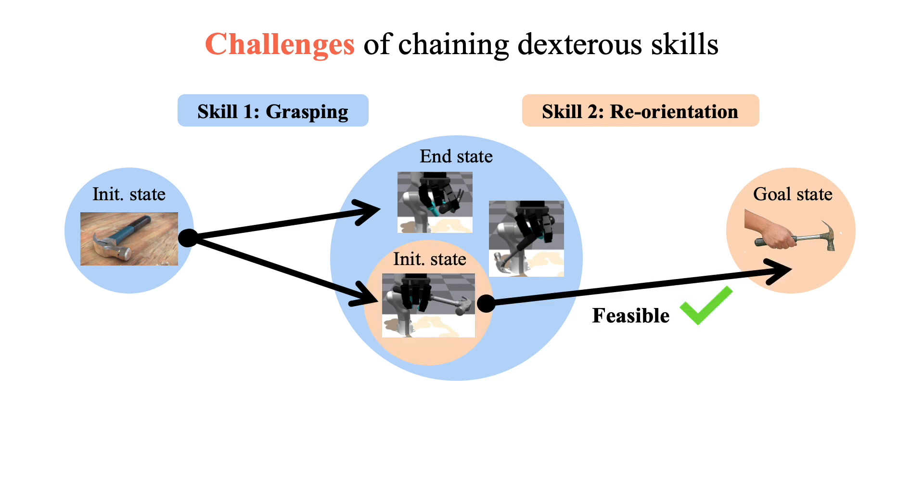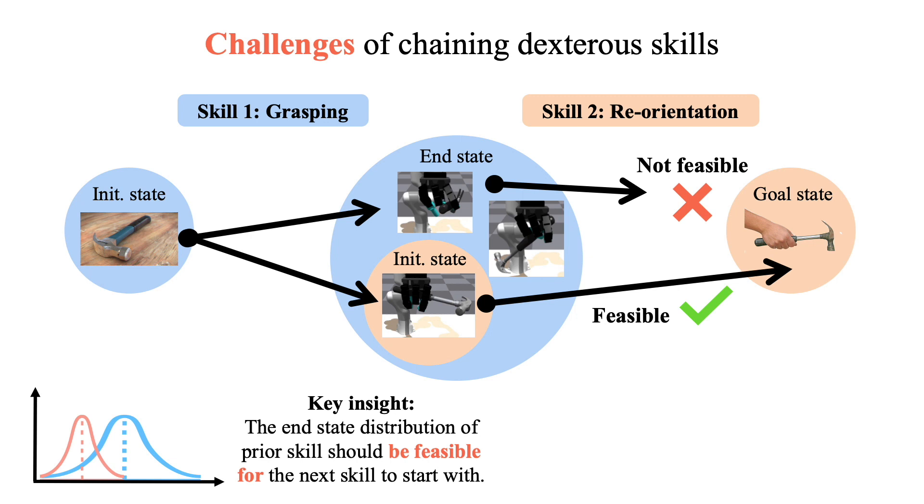However, only a small subset of these end-states are suitable for the execution of the second skill. This gave us a key insight that successful skill chaining requires the end-state distribution of prior skill to be feasible for the next skill to start with.